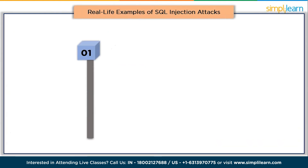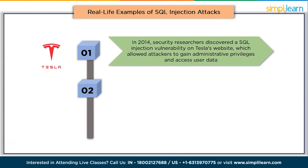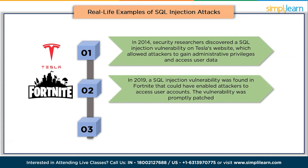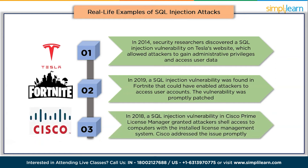Let's look at some real-life examples of SQL injection attacks. In 2014, security researchers discovered a SQL injection vulnerability on Tesla's website which allowed attackers to gain administrative privileges and access user data. In 2019, a SQL injection vulnerability was found in Fortnite that could have enabled attackers to access user accounts — the vulnerability was promptly patched. In 2018, a SQL injection vulnerability in Cisco Prime License Manager granted attackers shell access to computers with the in-store license management system, and Cisco addressed the issue promptly.